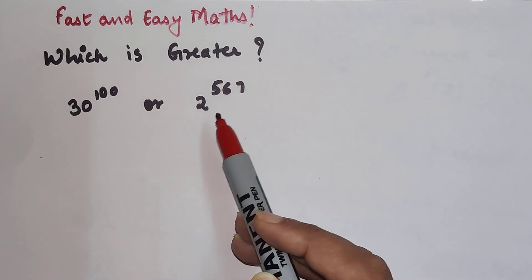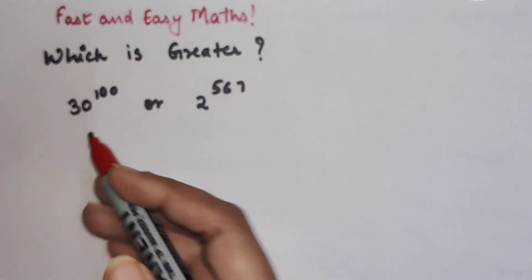Now this is very different, because this is like 2 in terms of 2 and this is in terms of 30.